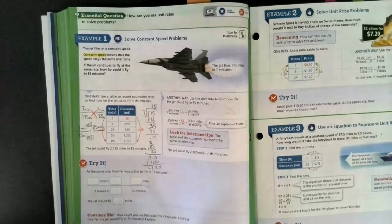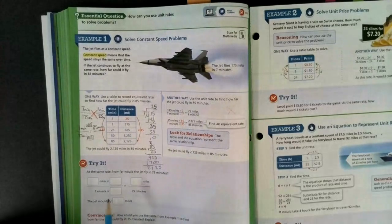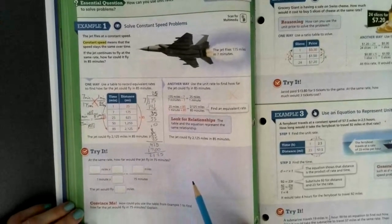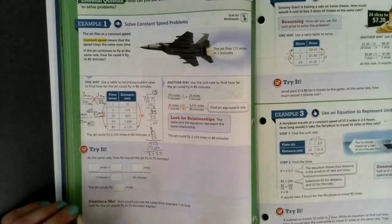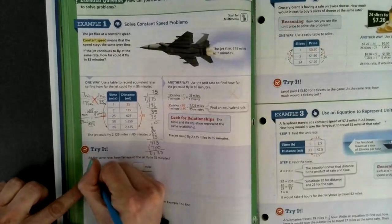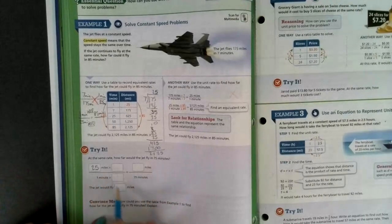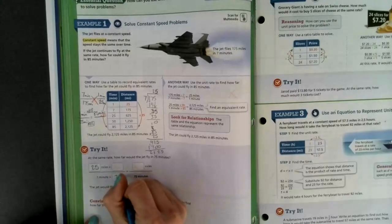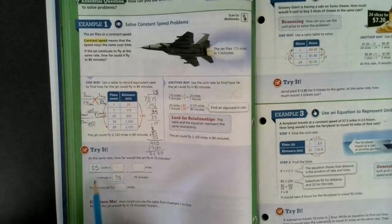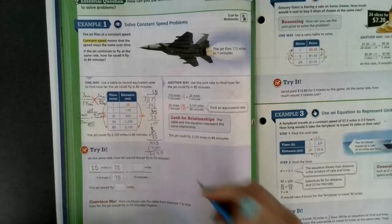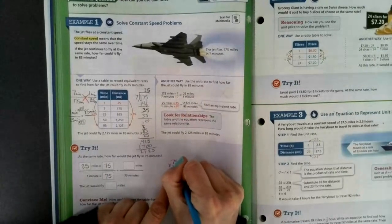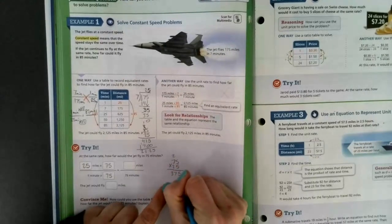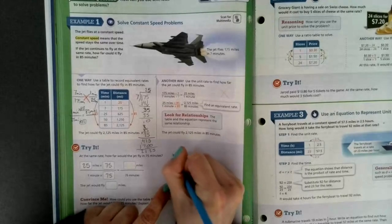Let's take a look at our Try It at the bottom. At the same rate, how far would the jet fly in 75 minutes? So I'm going to take that unit rate we just found, our one minute is 25 miles. So in one minute, 25 miles. I know I'm trying to get to 75 minutes. So one times 75 would give me my 75. I take my 25 also times 75. Whatever I do on one part, I have to do the same on the other. Then I am multiplying to figure out my answer.